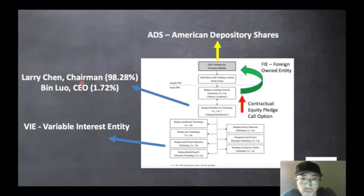It does not do anything other than having a subsidiary that has a contractual relationship with the operating company that actually generates the revenue. Larry Chan is the chairman of the company. He and the CEO currently own 100% of the operating entity in China. The equity investors do not directly own any percentage of the variable interest entities that's currently generating profits in China.